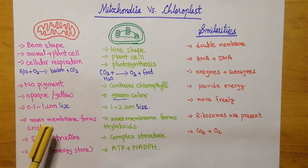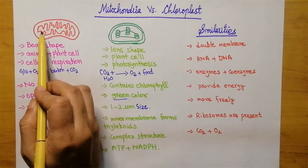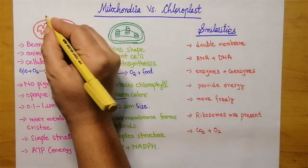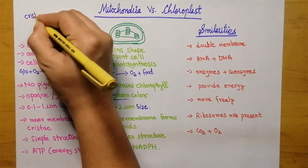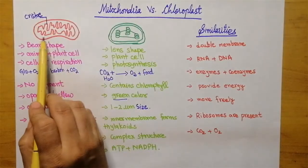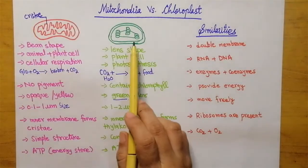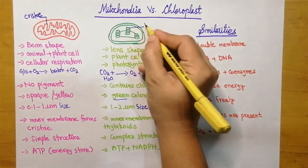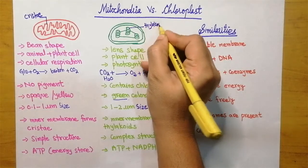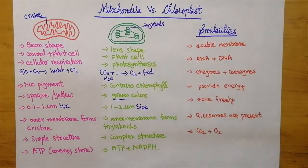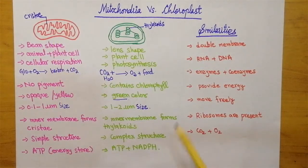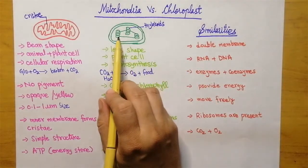When we talk about structure, the inner membrane of mitochondria folds and forms cristae. Here in this diagram, this folded structure is cristae. While in the case of chloroplast, the inner membrane forms thylakoids. These are the thylakoids.